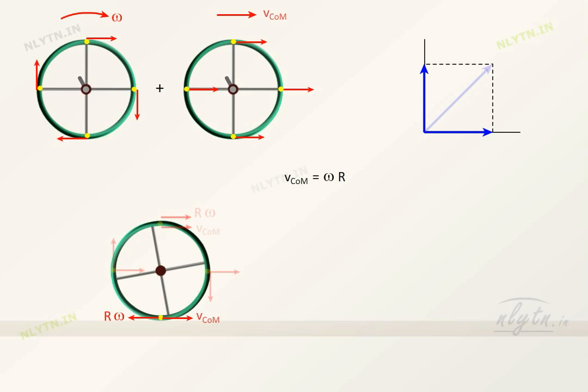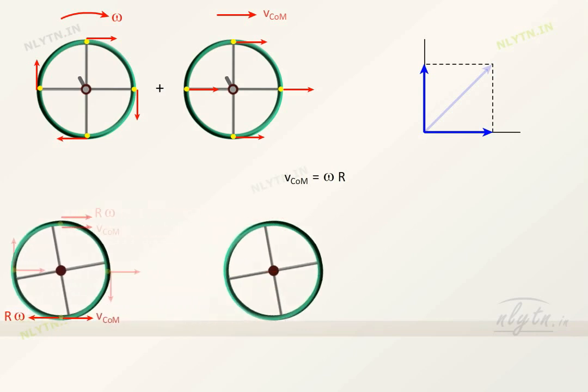That is, the point in contact with the surface is momentarily at rest. In fact, if we look at the motion of a rolling ring,